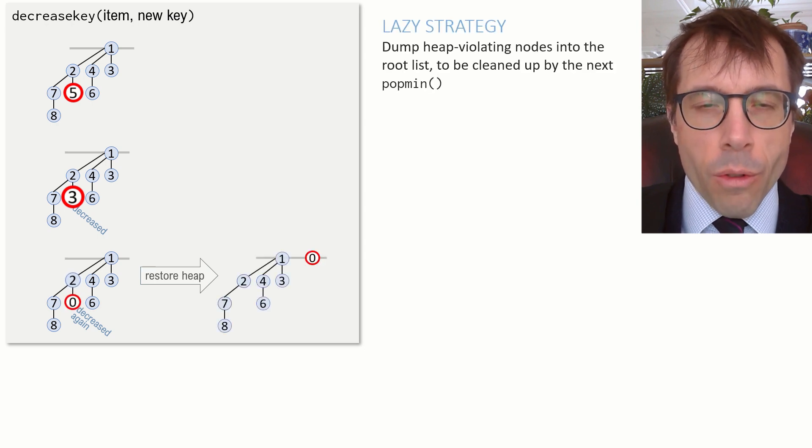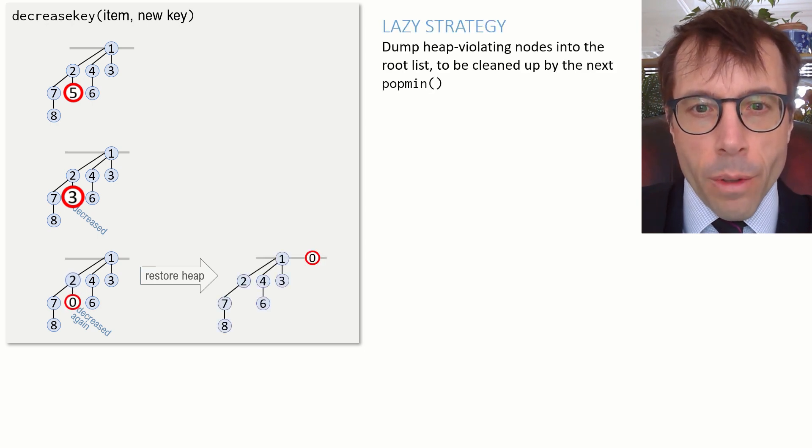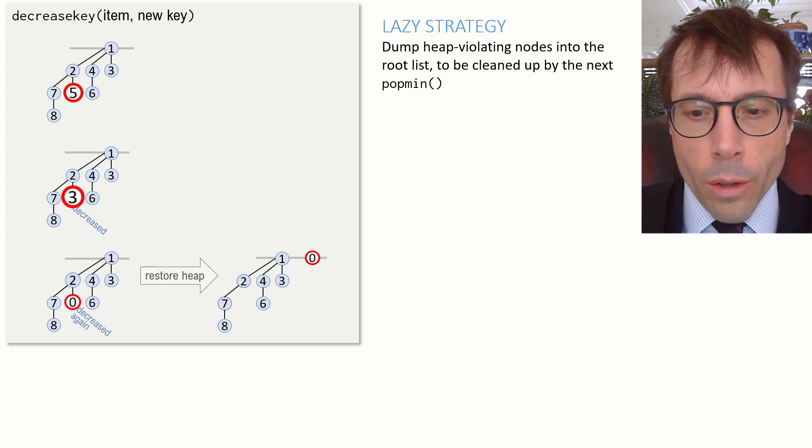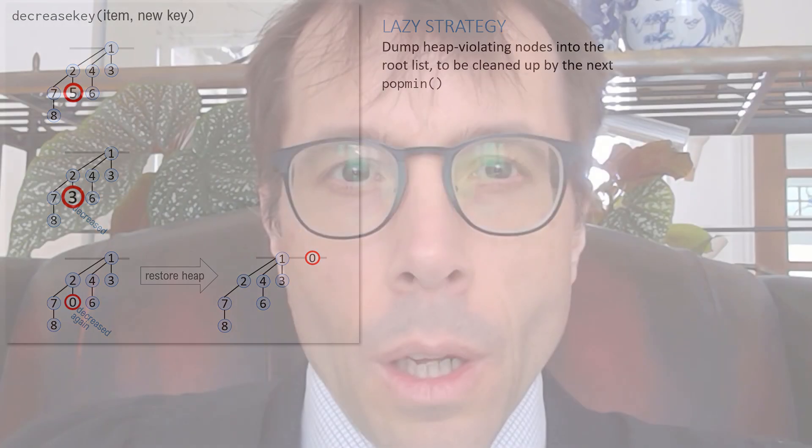We're going to take a lesson from the silly linked list implementation of the priority queue, and we're going to be completely and utterly lazy. We're going to just slice this node out from its parent, and we're going to dump it into the root list.